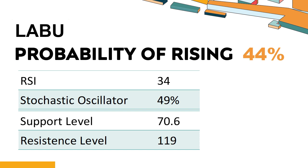Trend Outlook: LABU has a 44% probability of rising stock price. When the probability of rising is lower than 50%, the probability of falling is relatively high. Combining multiple technical analysis indicators, LABU has three bullish signals and four bearish signals. LABU's short-term support level is 78.9; if it falls below 78.9 during the session, it will have a chance to test 70.6.